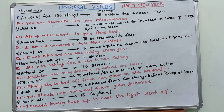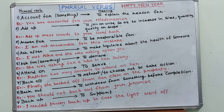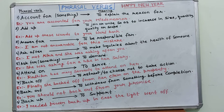The sixth one is 'attend on,' meaning to serve someone. Example: Radhika has many servants to attend on her. The seventh one is 'back off,' meaning to retreat or to choose not to take action. Example: Finally, she backed off from her claim on the property.